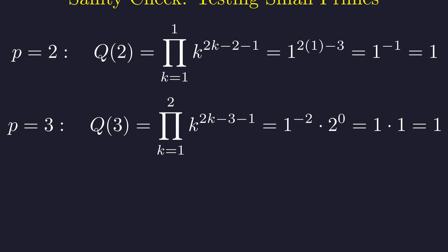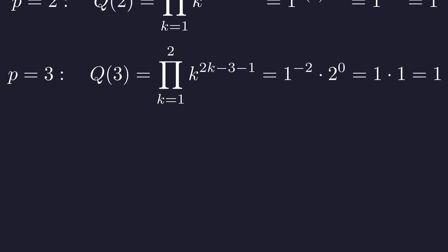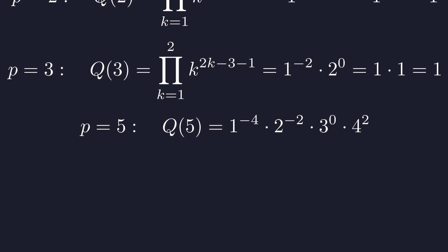For p equals 5, things get genuinely interesting. Look at these exponents: negative 4, negative 2, 0, and positive 2. This is where we really see those negative exponents in action creating what should be messy fractions.